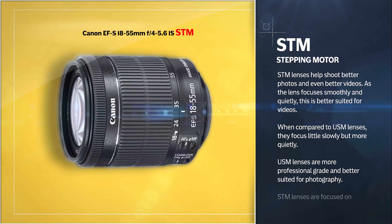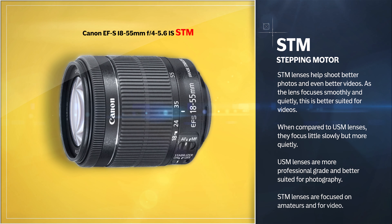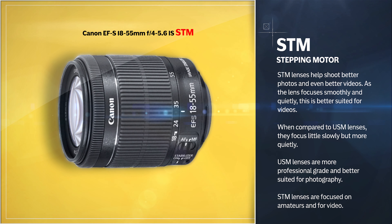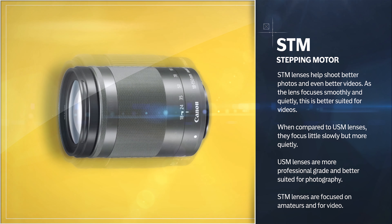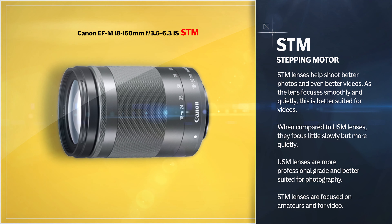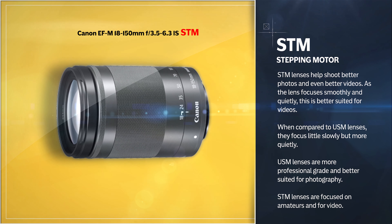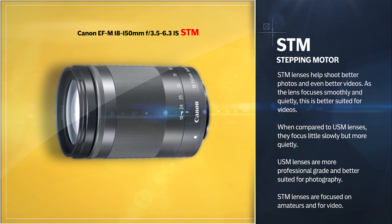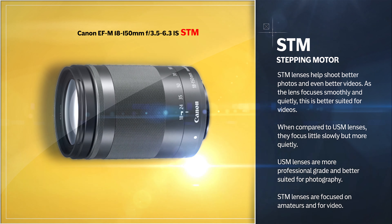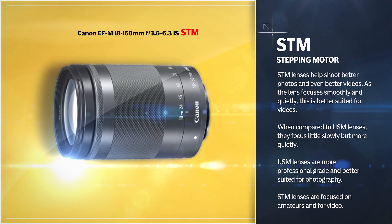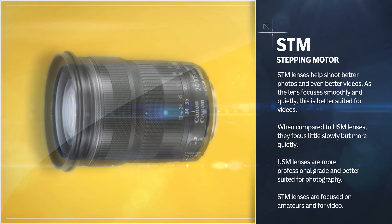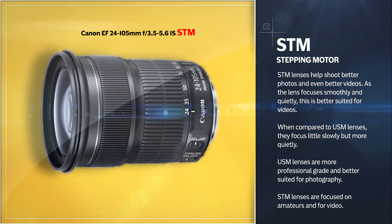STM stands for Stepping Motor. STM lenses help shoot better photos and even better videos, as the lens focuses smoothly and quietly, making them better suited for video. When compared to USM lenses, they focus a little more slowly but more quietly. USM lenses are more professional grade and better suited for photography, while STM lenses are focused on amateurs and are ideal for video.